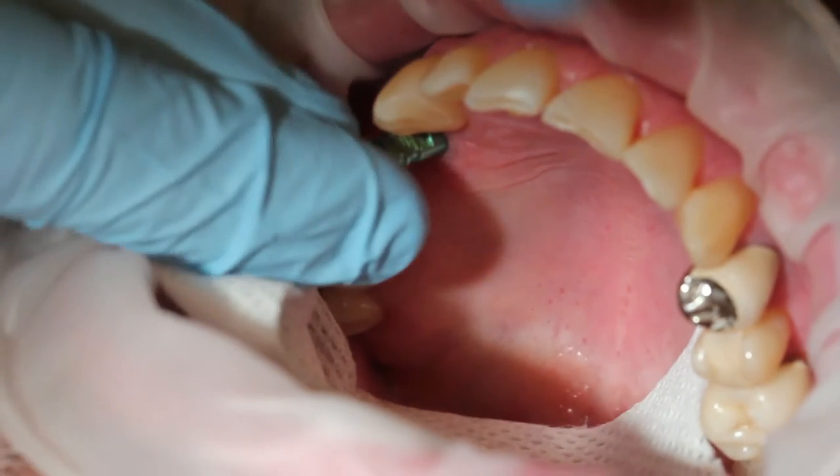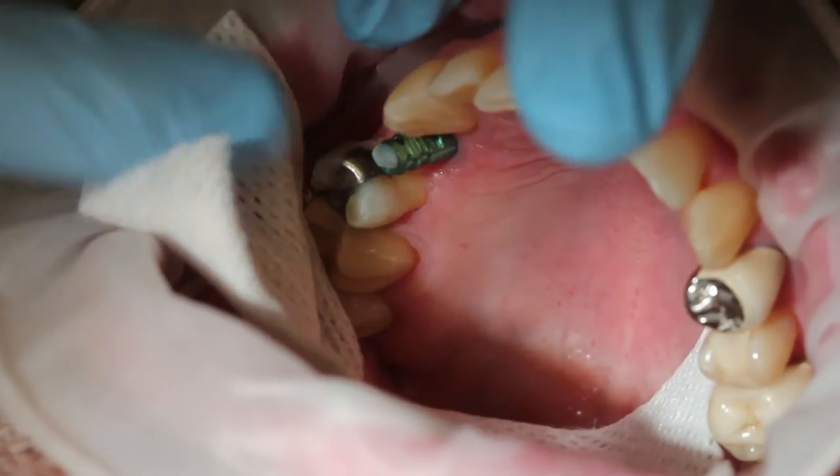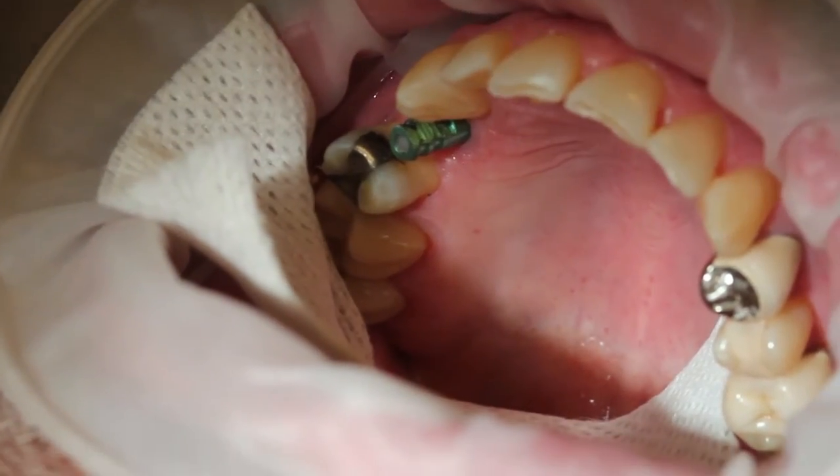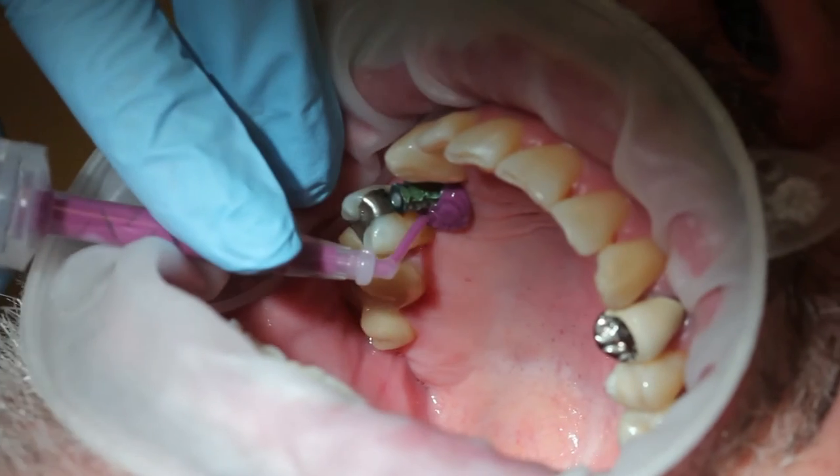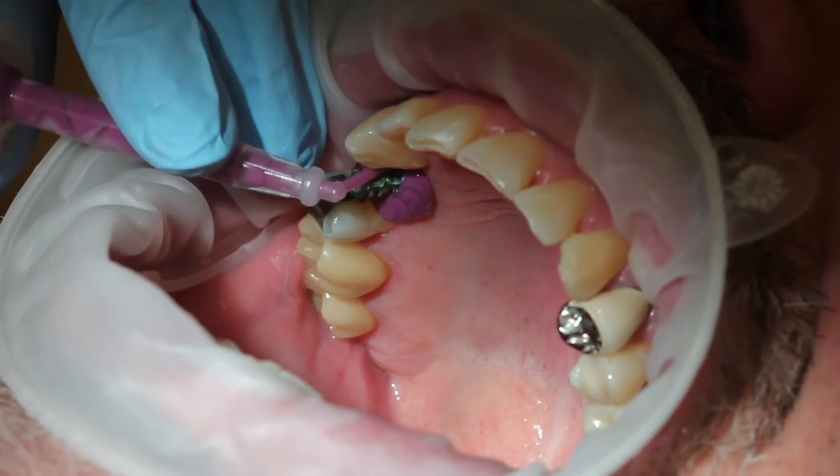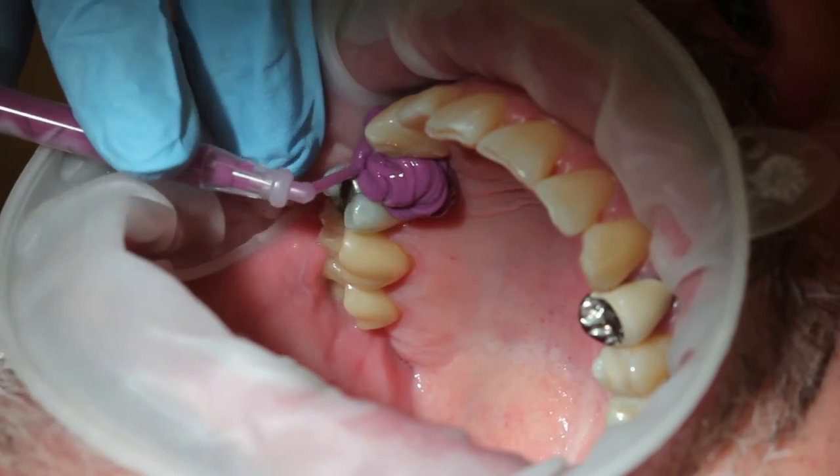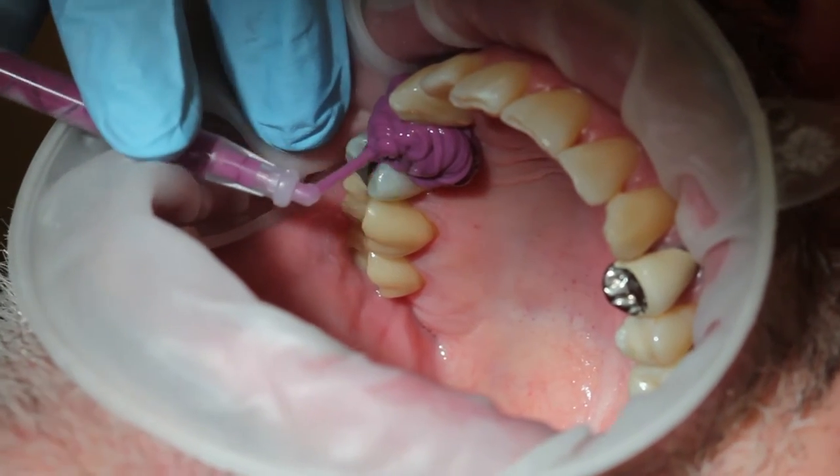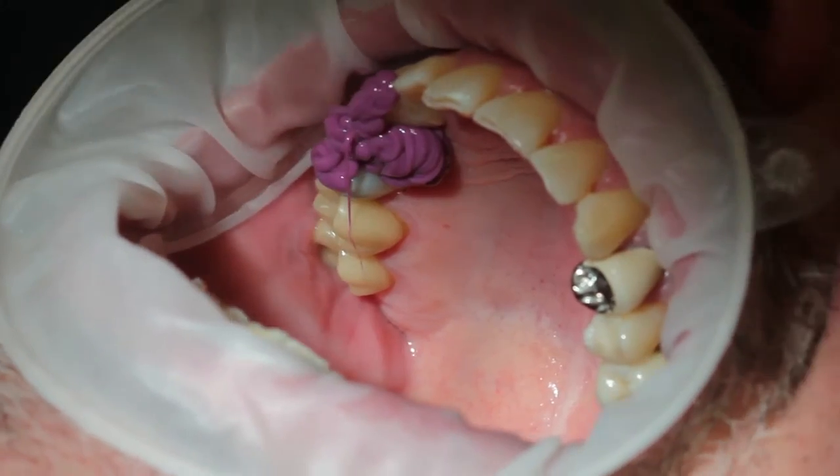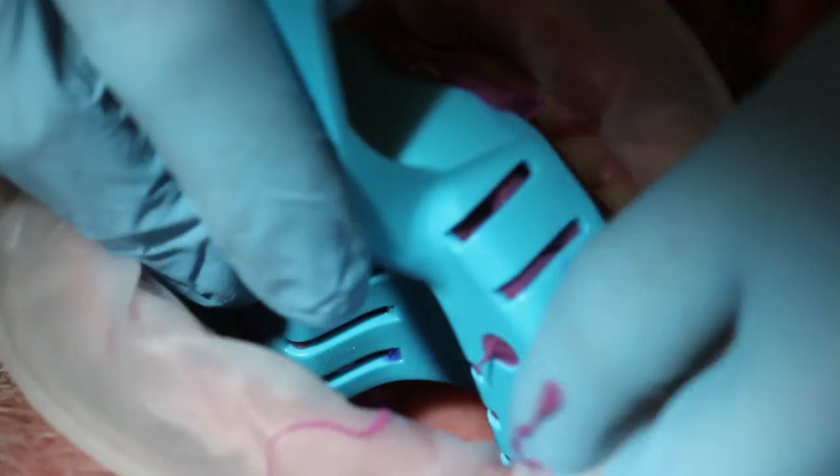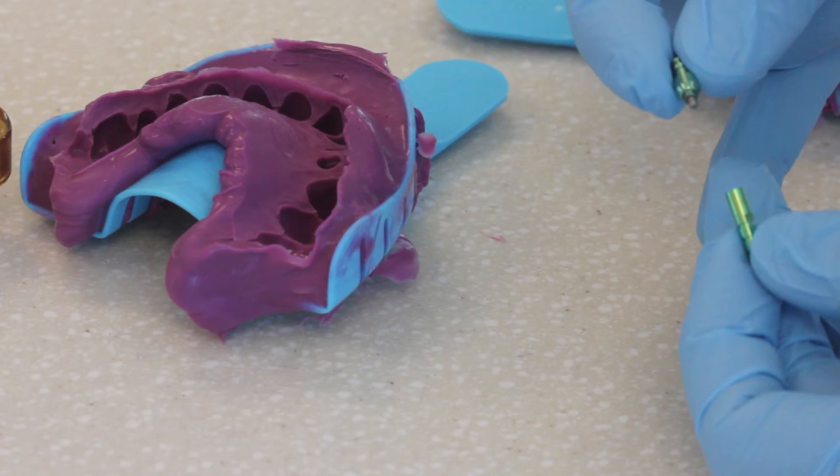The next step is to confirm the seat of the impression coping onto the implant with a radiograph. Once the seat is confirmed, cover the screw hole with orthowax. Use medium body PVS to syringe around the impression coping and some of the adjacent teeth. Also use medium body PVS into the tray. Seat that tray like you would any other crown and bridge impression. After the material is set, remove the impression from the mouth.